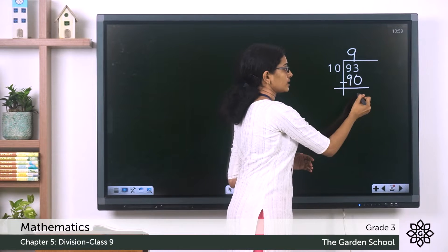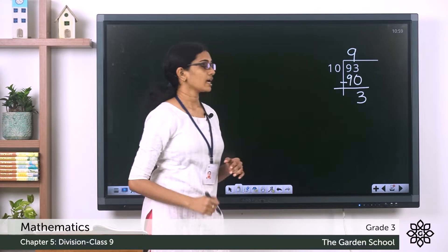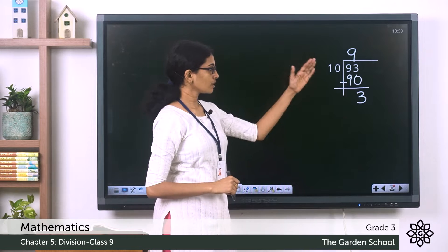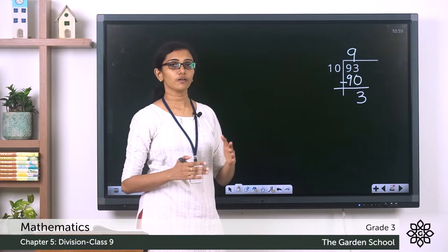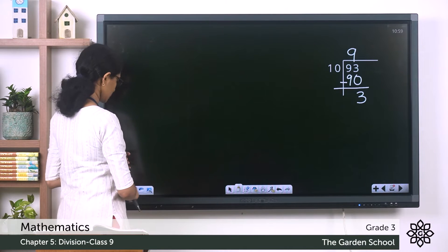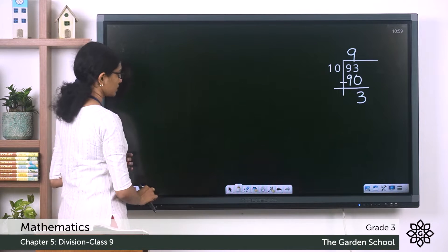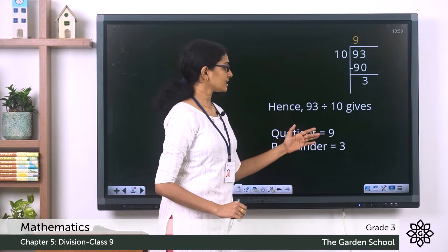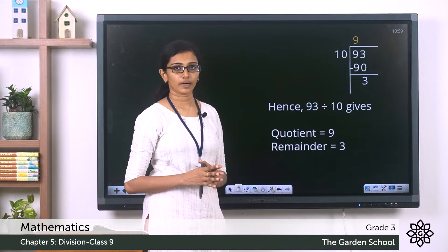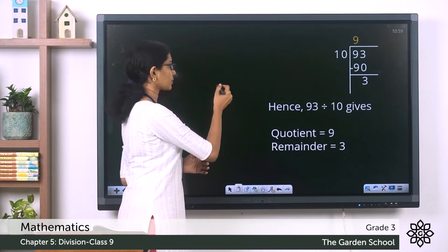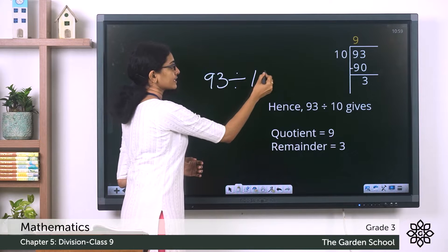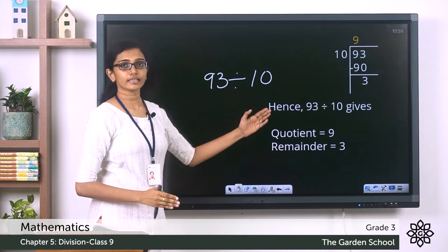We get 93 minus 90 equals 3. Are there any more digits to bring down? No, so let's stop the division there. The quotient is 9 and the remainder is 3.